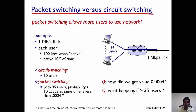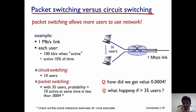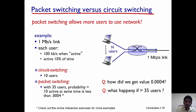Each user is only active 10% of the time. In a circuit switch network, regardless of how long users are active, the entire resource must be allocated to them. Because each user requires 100 kilobits per second, only 10 users can be accommodated — since 100 kbps × 10 = 1 Mbps — so circuit switching can only support 10 users.